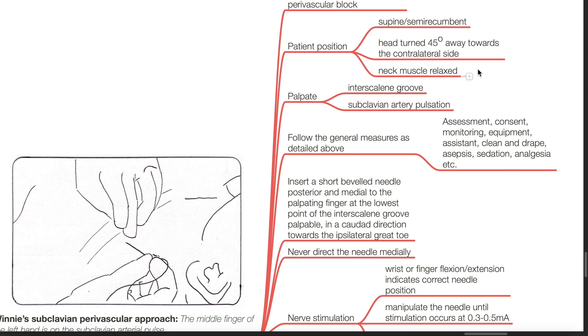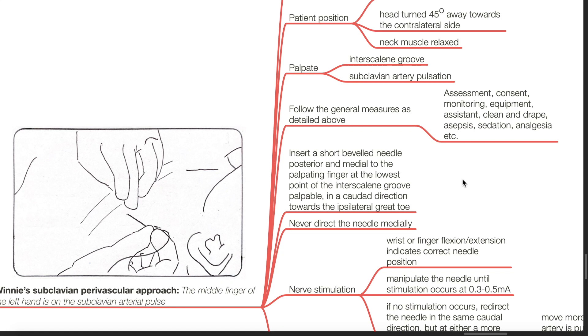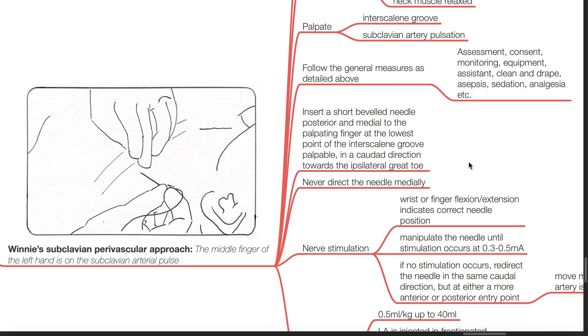Palpate the interscalene groove and the subclavian artery pulsation. Follow the general measures as detailed. Insert a short bevel needle posterior and medial to the palpating finger at the lowest point of the interscalene groove, palpable in the caudal direction towards the ipsilateral great toe. Never direct the needle medially.